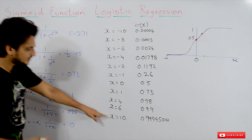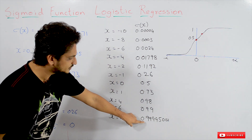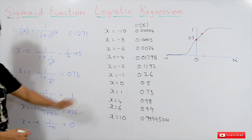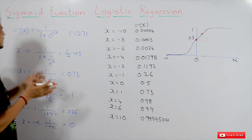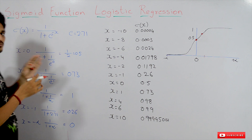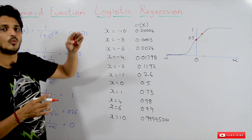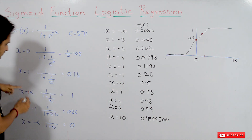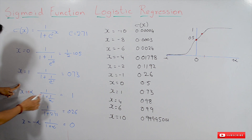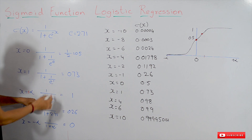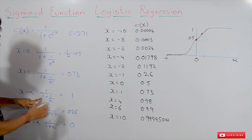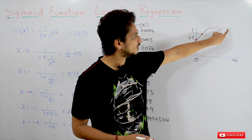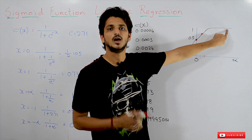At x equals 10, we get a value of 0.9999995 — something very close to 1. At x equals plus infinity, 1 divided by 1 plus e to the power infinity: e to the power infinity is infinity, so 1 divided by infinity is 0, giving 1 plus 0 equals 1, and 1 divided by 1 equals 1. So at x equals infinity, the sigmoid function has a value of 1.